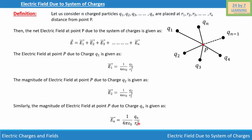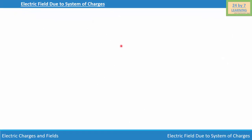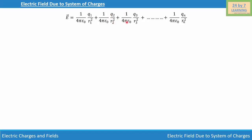Now to find the total electric field, I'm going to substitute the values of E1, E2, E3 ... En into this equation. So E = 1/(4πε₀) × Q1/R1² + 1/(4πε₀) × Q2/R2² + 1/(4πε₀) × Q3/R3² + ... + 1/(4πε₀) × Qn/Rn². Since 1/(4πε₀) is common from all terms, we take it out: E = 1/(4πε₀) × [Q1/R1² + Q2/R2² + Q3/R3² + ... + Qn/Rn²].